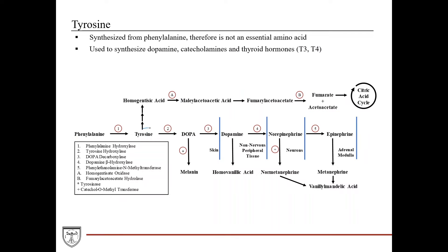Starting with tyrosine, it can be synthesized from phenylalanine, so it's not an essential amino acid. It is used to synthesize dopamine, catecholamines, and thyroid hormones.